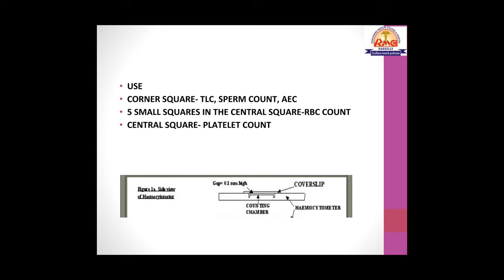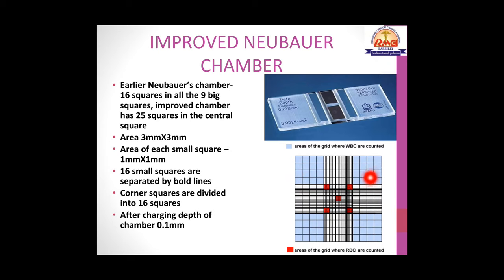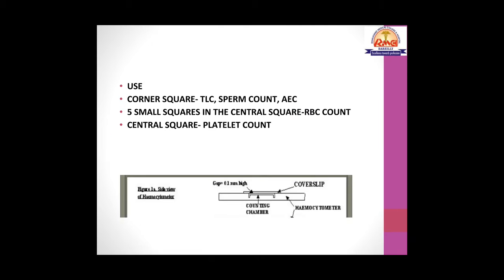The corner squares of the Neubauer chamber (marked in blue) are used mainly for WBC count. The five small central squares are used for RBC count, and the entire central square can be used for platelet count. The corner squares are also used for sperm count and absolute eosinophil count. After placing the cover slip, the depth of the chamber is 0.1 mm. The Neubauer chamber is also known as a hemocytometer.